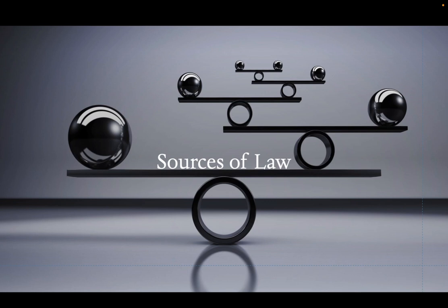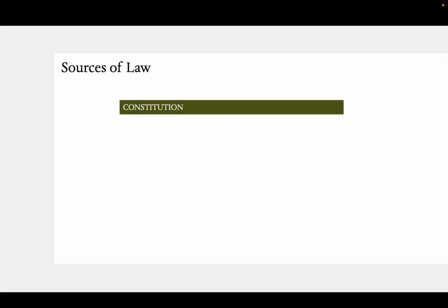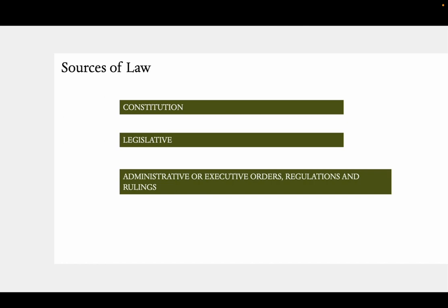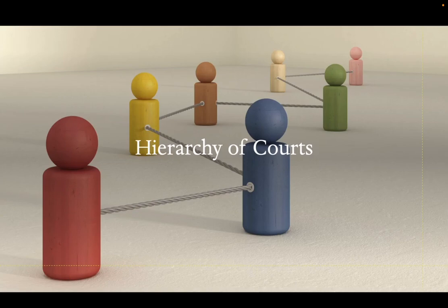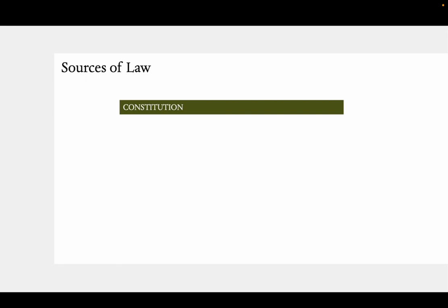Now let us go to the sources of law under state law. First, it comes from the constitution, then the legislative, the administrative or executive orders, regulations and rulings, judicial decisions or jurisprudence, and custom. Let us start with the constitution. The constitution is the supreme law of the land which all laws must conform. It is the highest law in the Philippines, and you cannot give or create a law that violates the constitution.